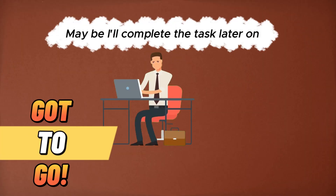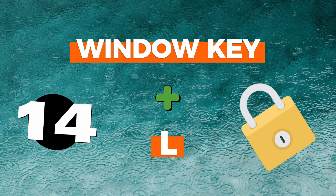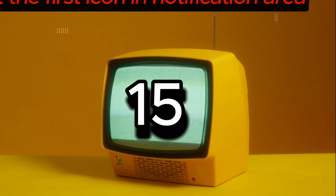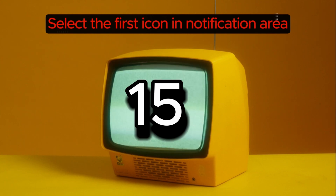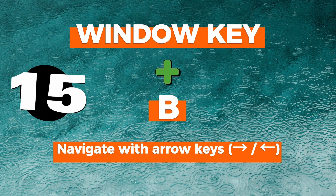Number fourteen: lock down your PC. If you're in the middle of an important task and need to leave your computer but don't want anyone to access your files, you don't have to shut down. Simply hit Windows key + L on your keyboard and it locks access to your desktop.